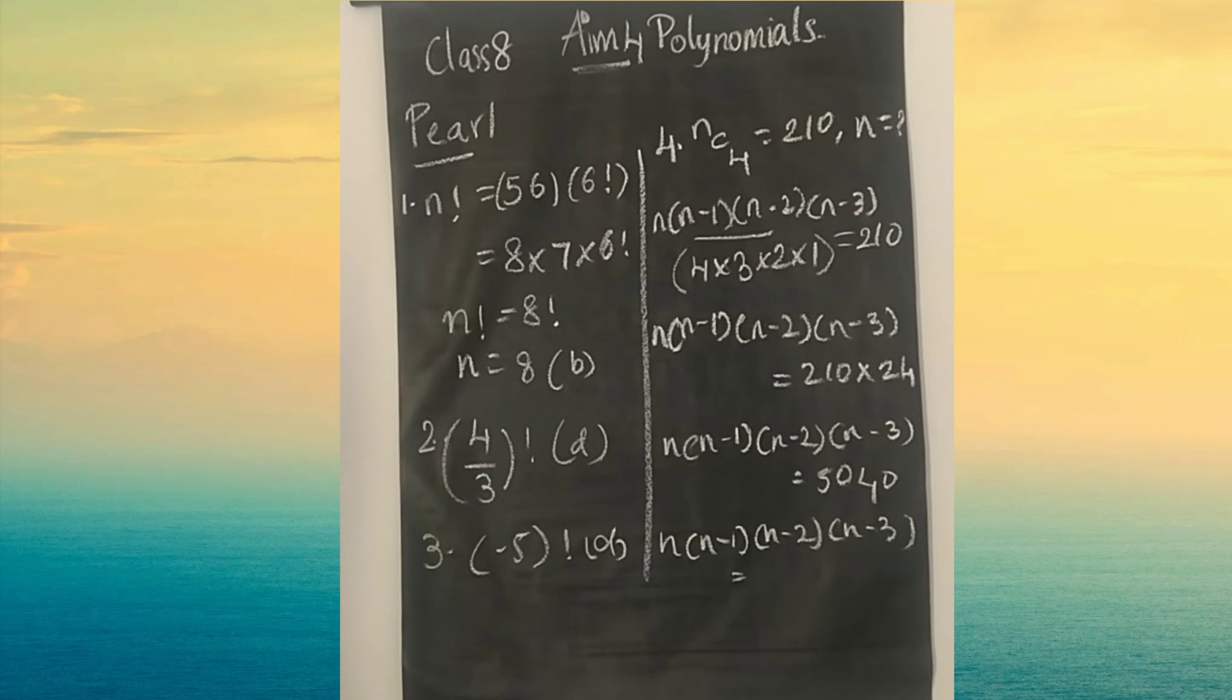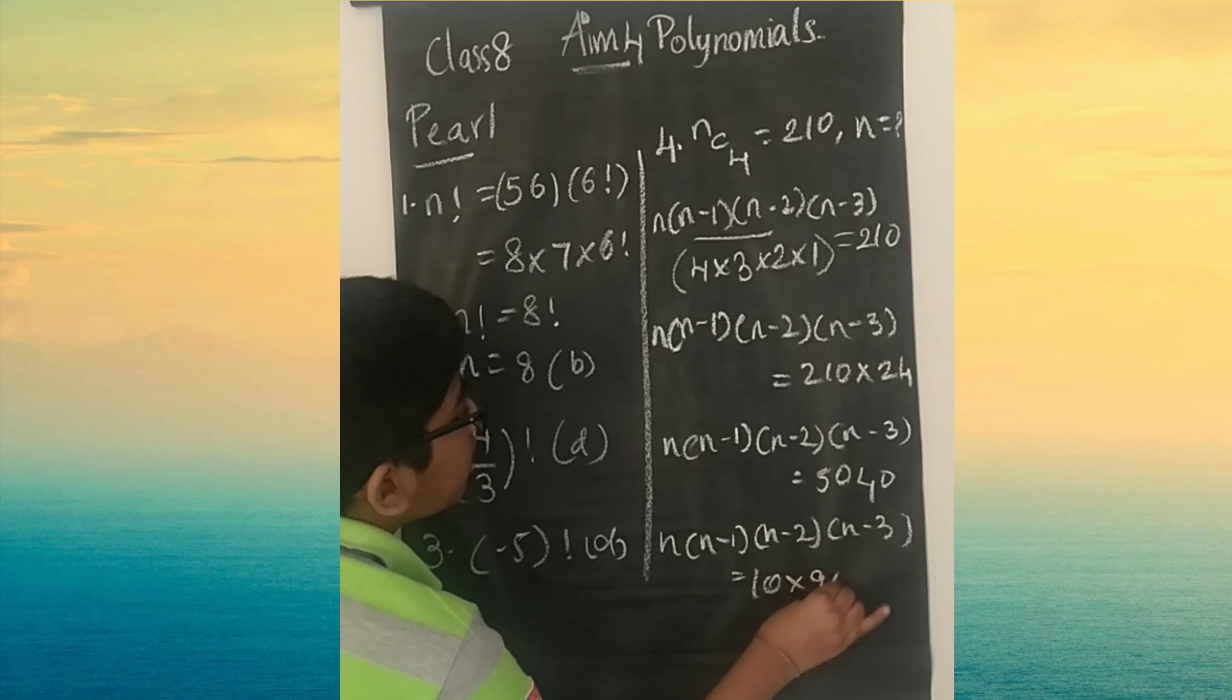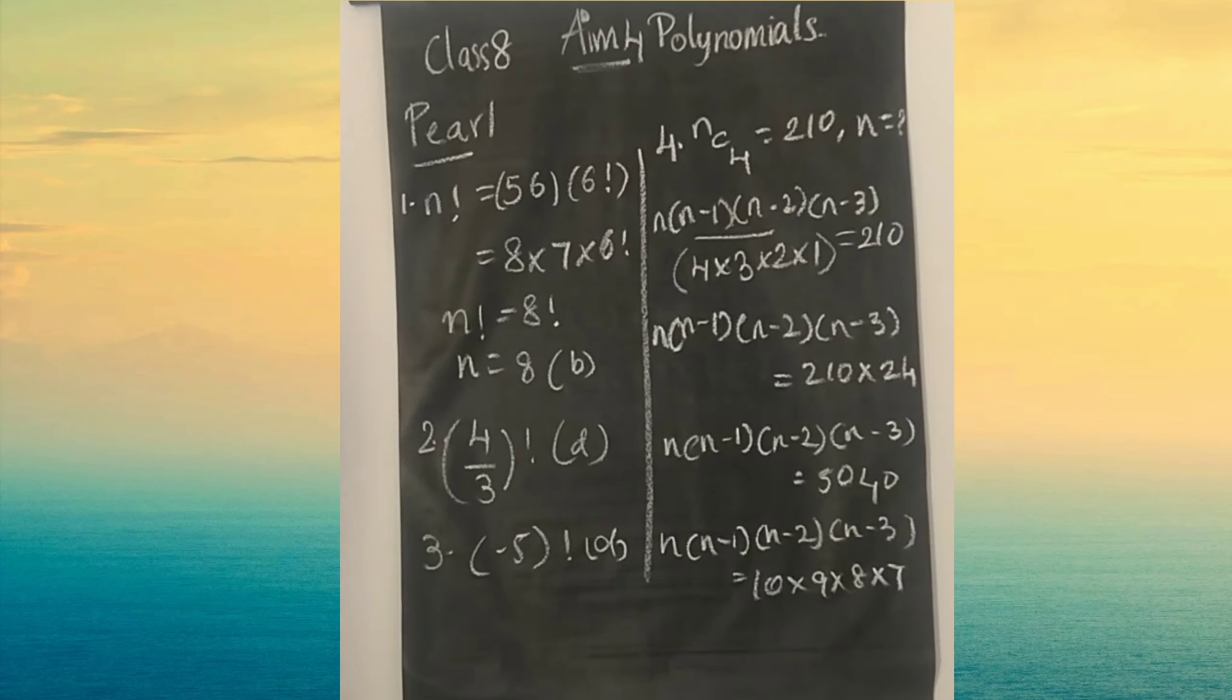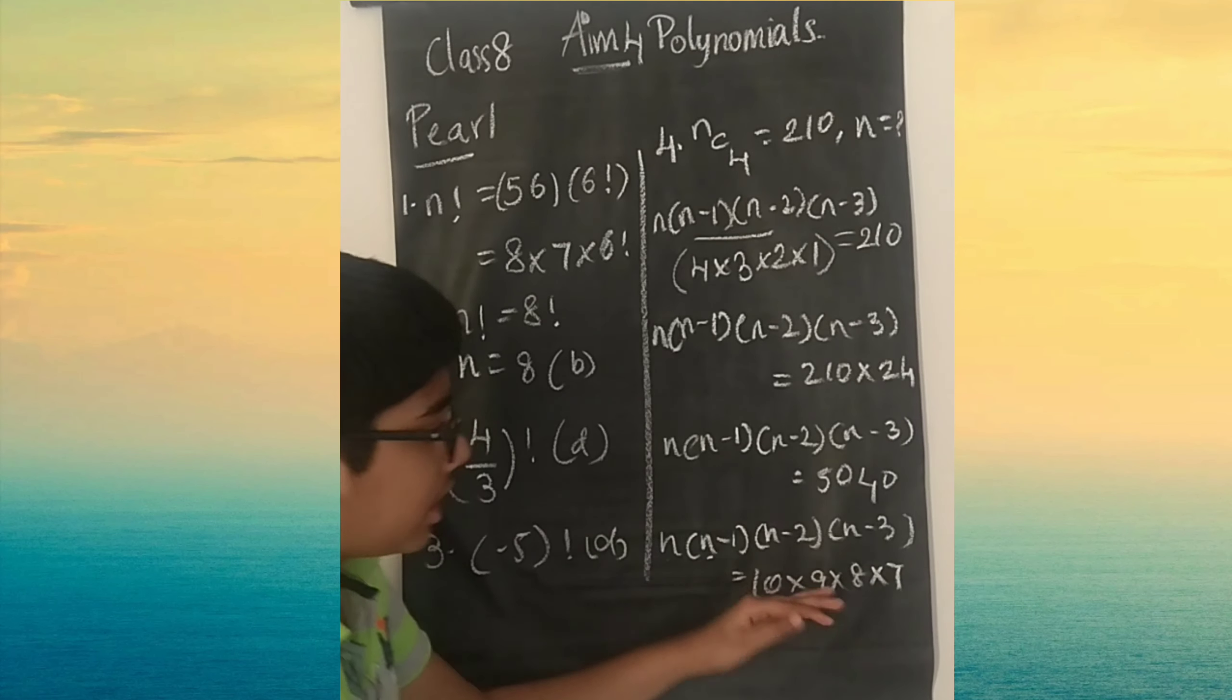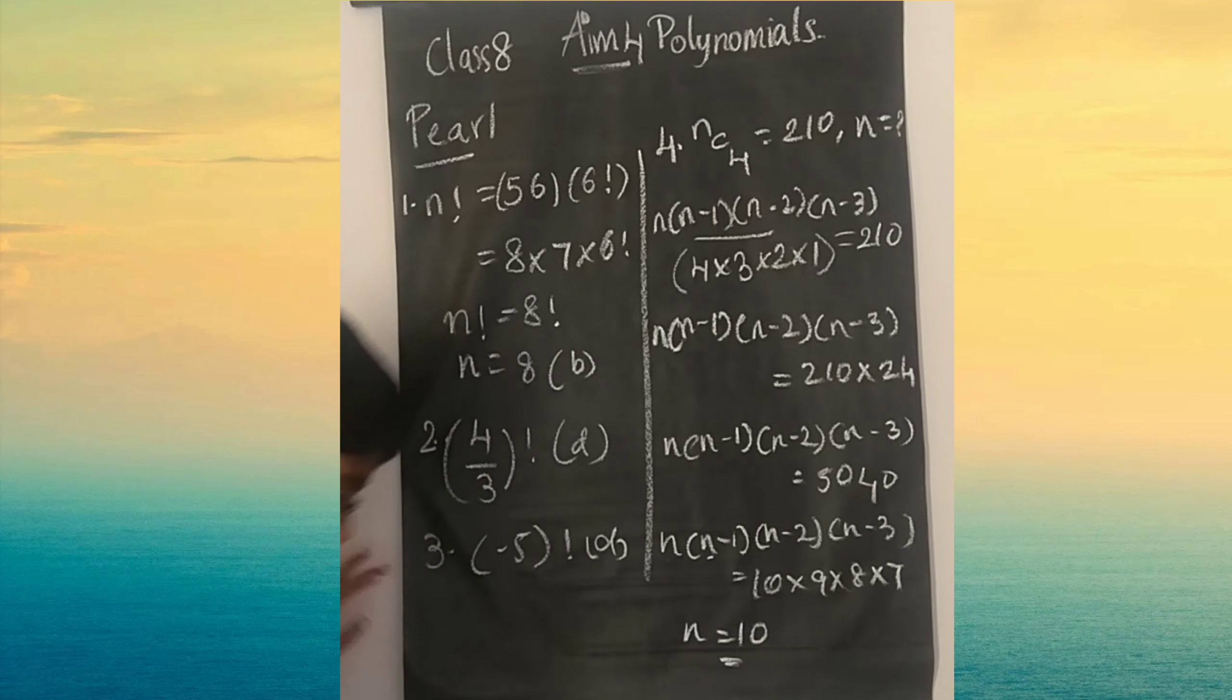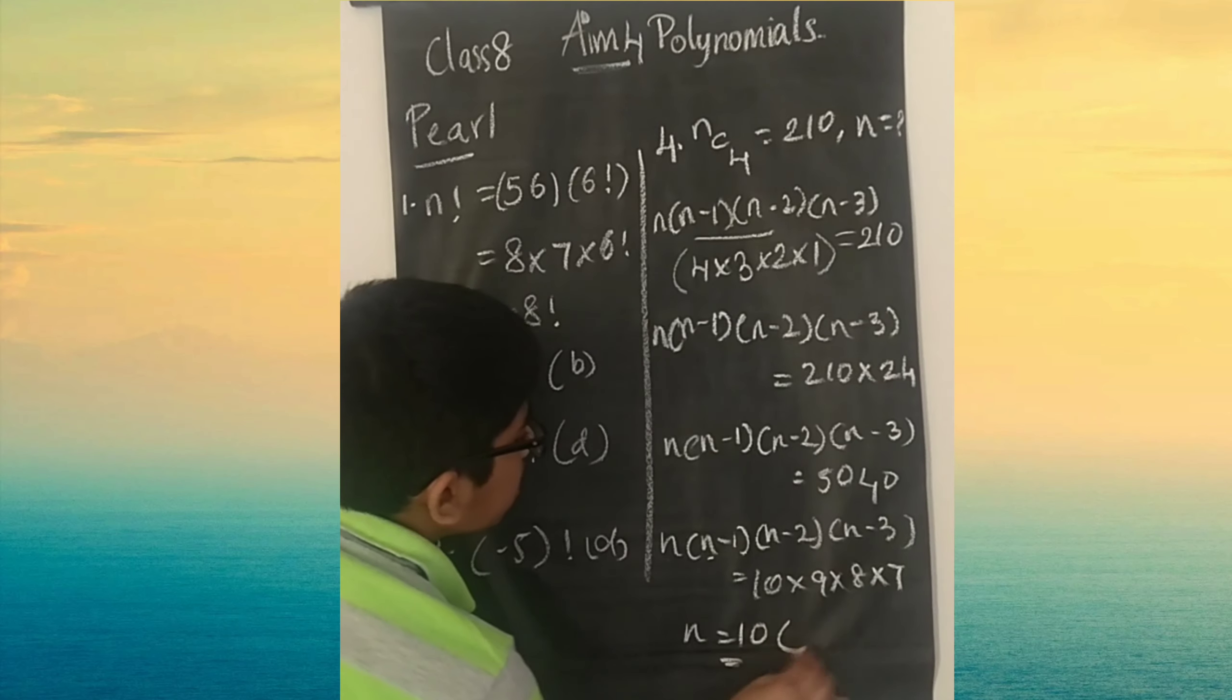5040 can be split into 10 into 9 into 8 into 7. Now you can see it's 10 factorial. We take the greatest number. If you take n as 10, then n minus 1 is 9, n minus 2 is 8, n minus 3 is 7. Very simple reason. So n equals 10 and option D.